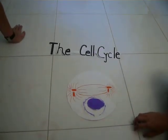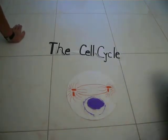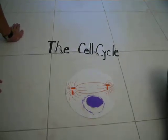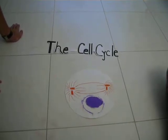The first stage of the cell cycle is the interphase. The interphase is divided into three parts: the G1, the S, and the G2 phase.